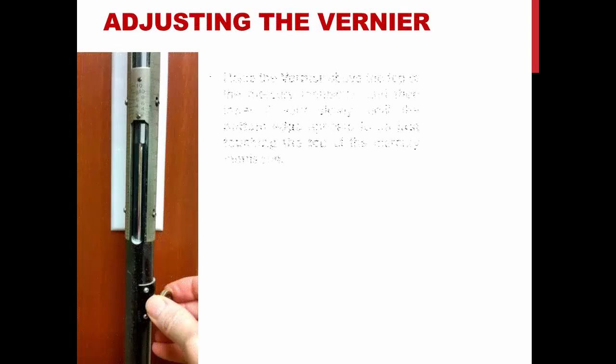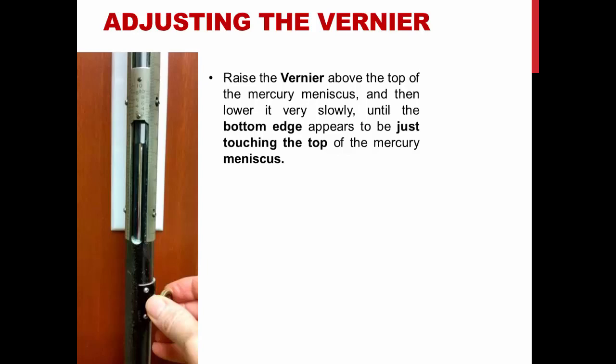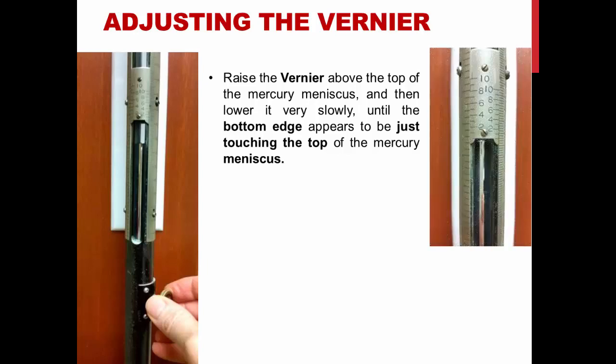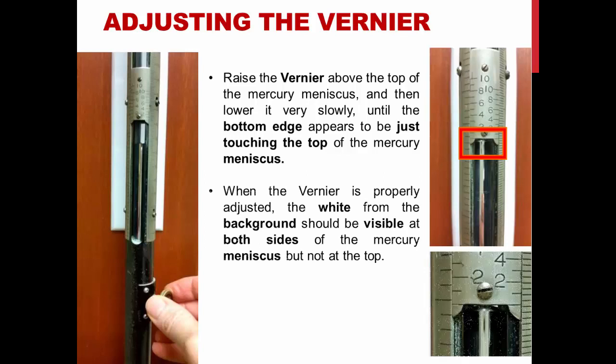Adjusting the vernier. Raise the vernier above the top of the mercury meniscus and then lower it very slowly until the bottom edge appears to be just touching the top of the mercury meniscus. When the vernier is properly adjusted, the white from the background should be visible at both sides of the mercury meniscus, not at the top.